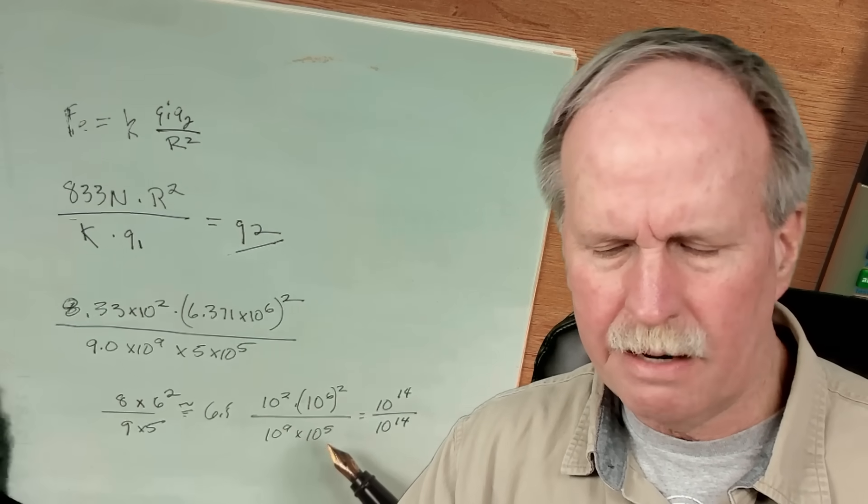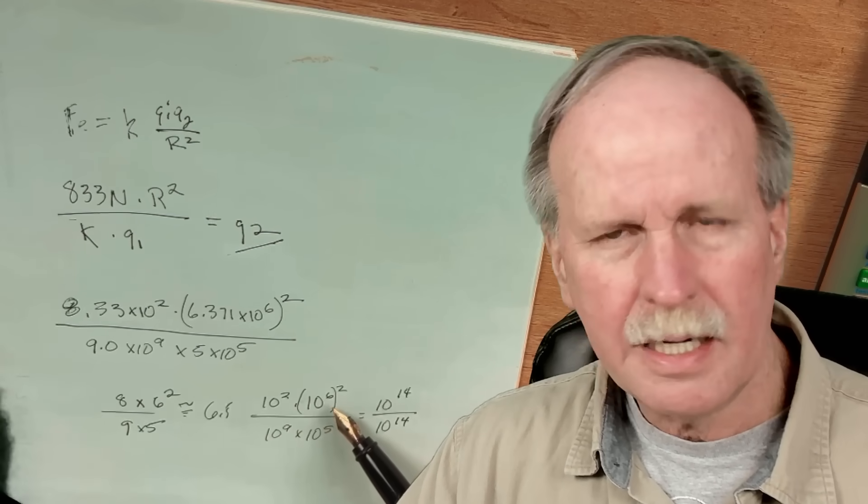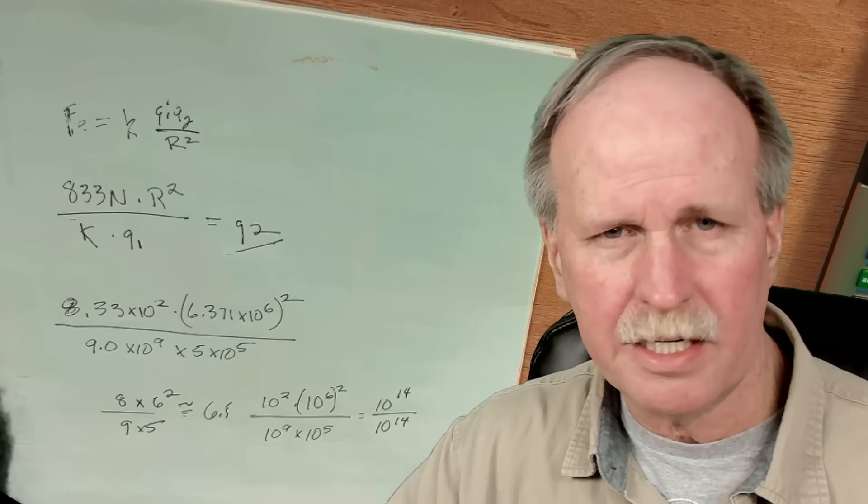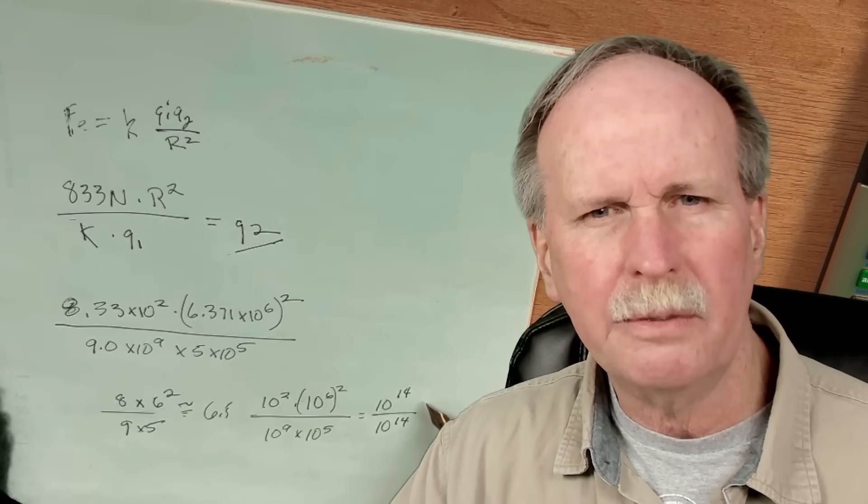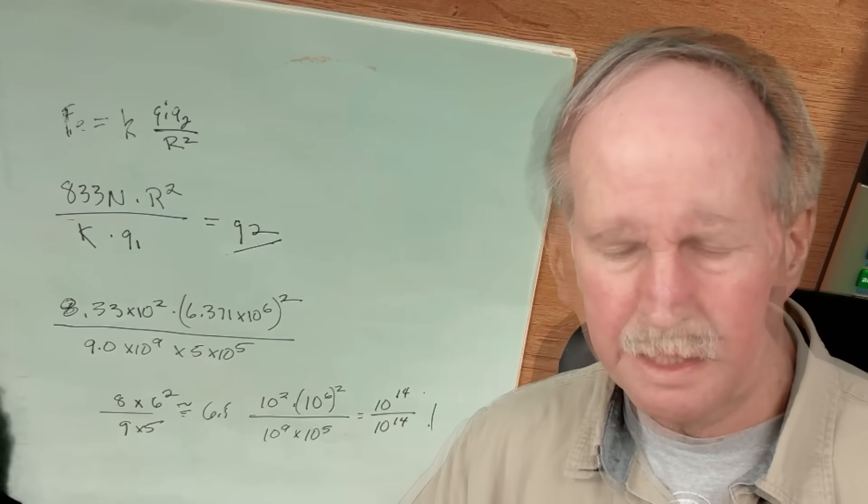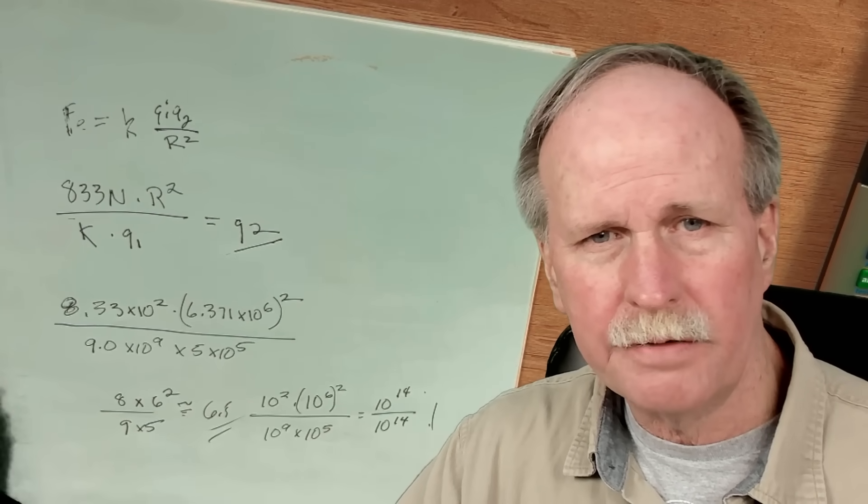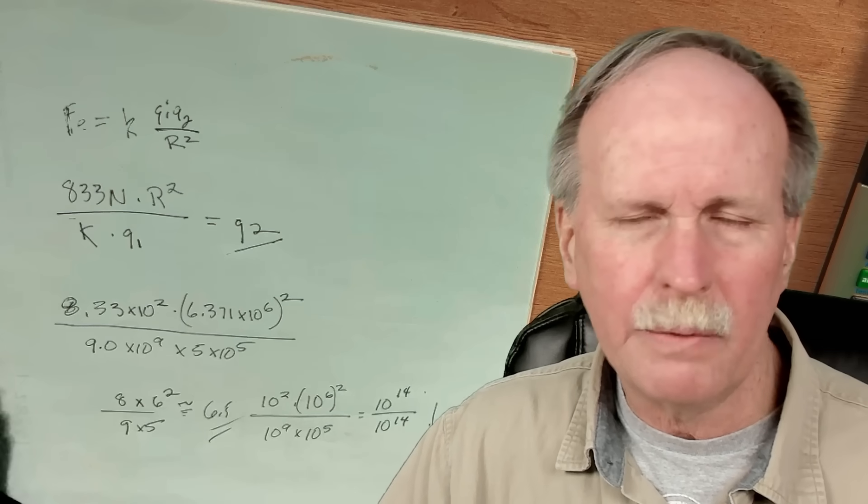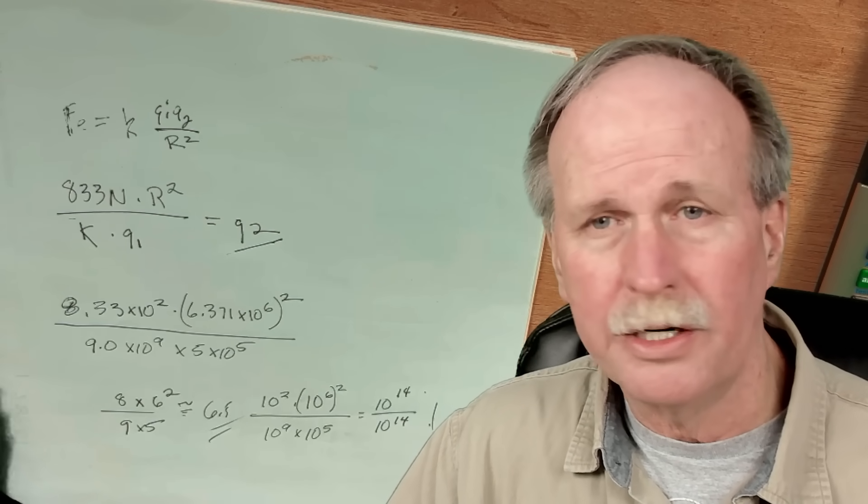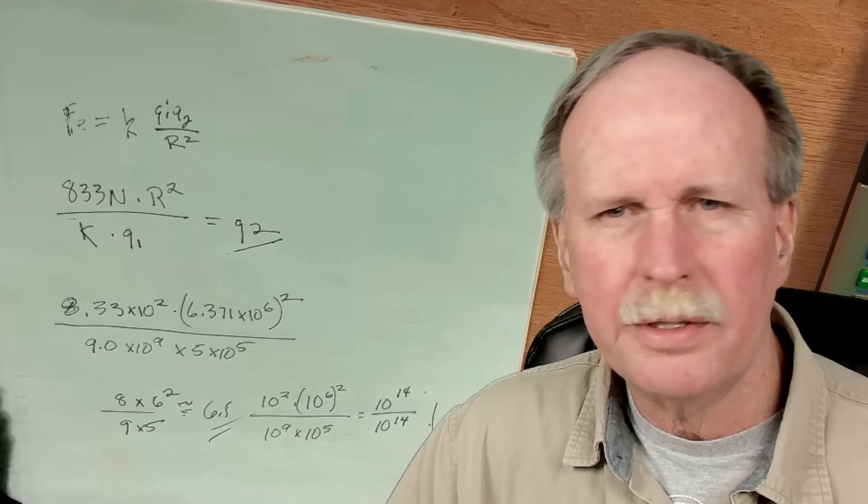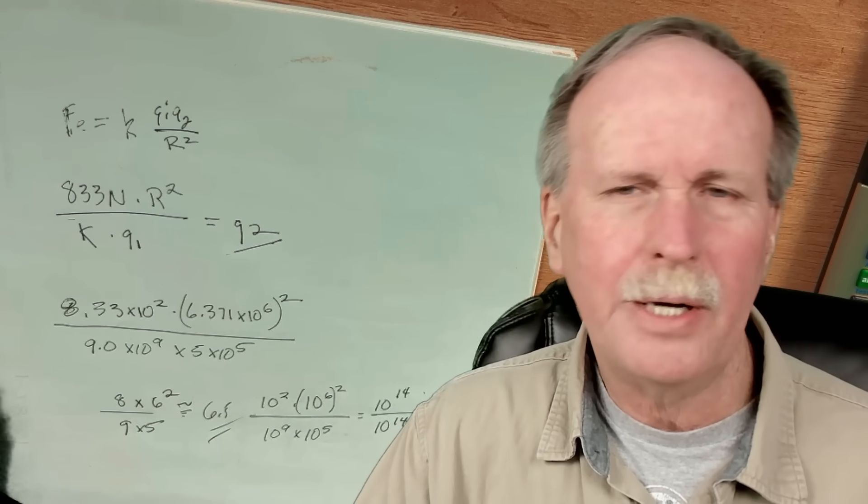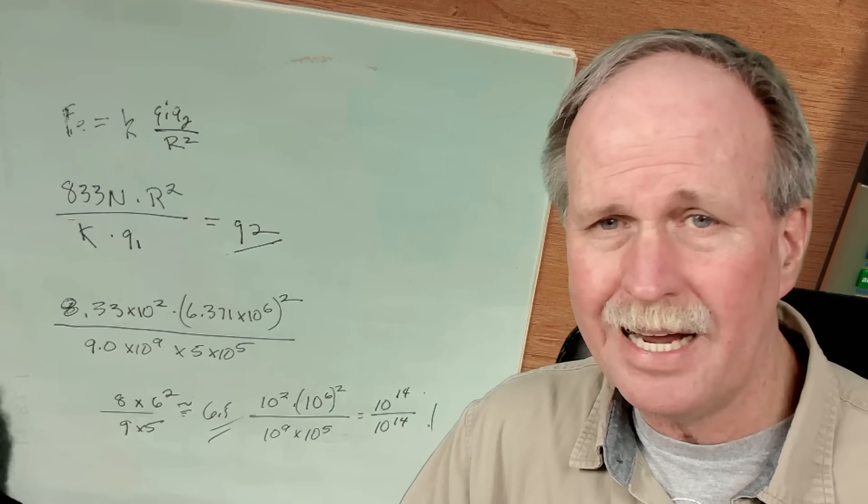And then when we look at the powers of 10, we've got 10 to the 2 times 10 to the 6 squared, and that's going to be divided by 10 to the 9th times 10 to the 5th. So what we're dealing with is essentially 10 to the 14th over 10 to the 14th, and that's 1. So our final answer is going to be somewhere in the vicinity of 6.5. Now again, we rounded this, so that's 6.5 plus or minus 1 or 2. We wanted to get this because we wanted to see whether or not that number was going to be greater than 10 or less than 1. It's not. So let's go ahead and pull up a slide rule, and we'll do the actual math.